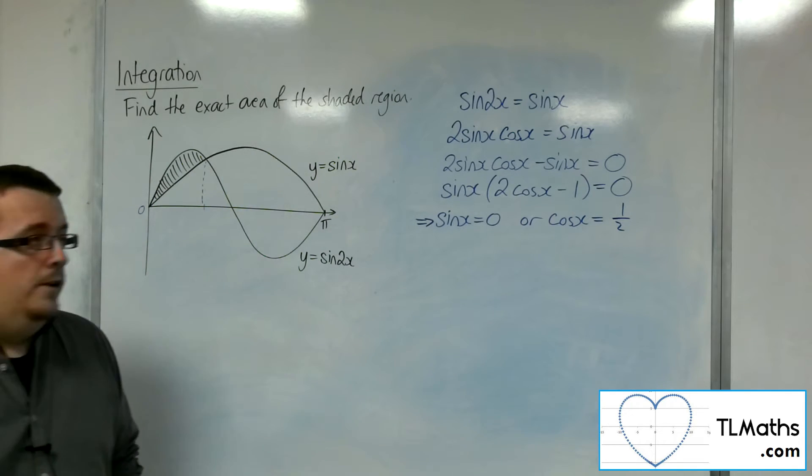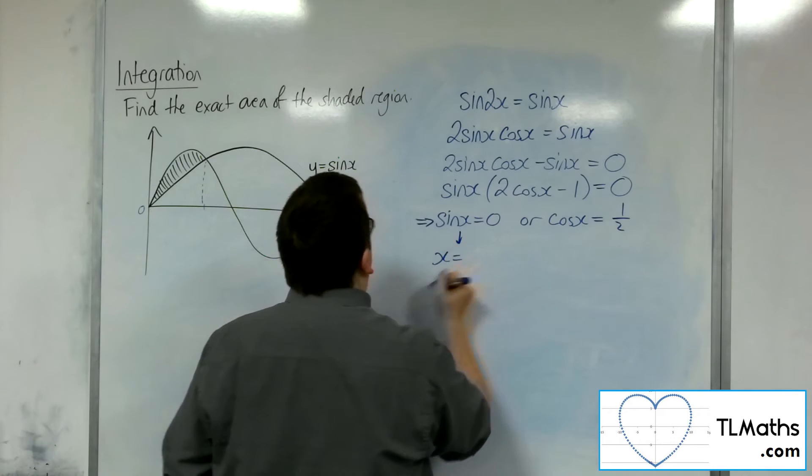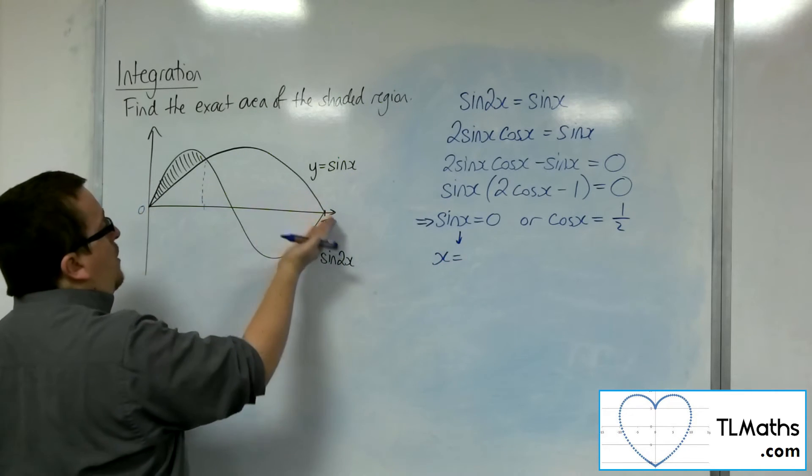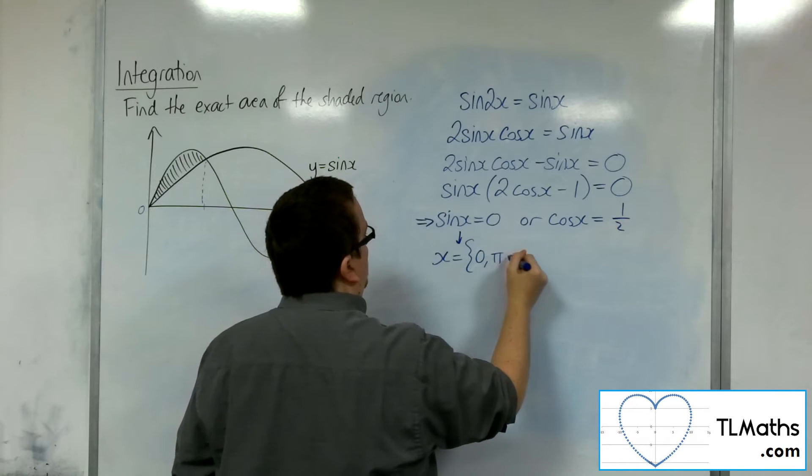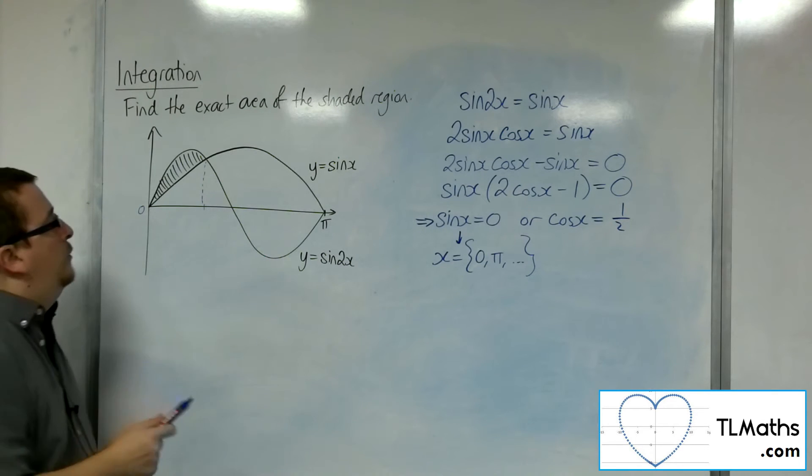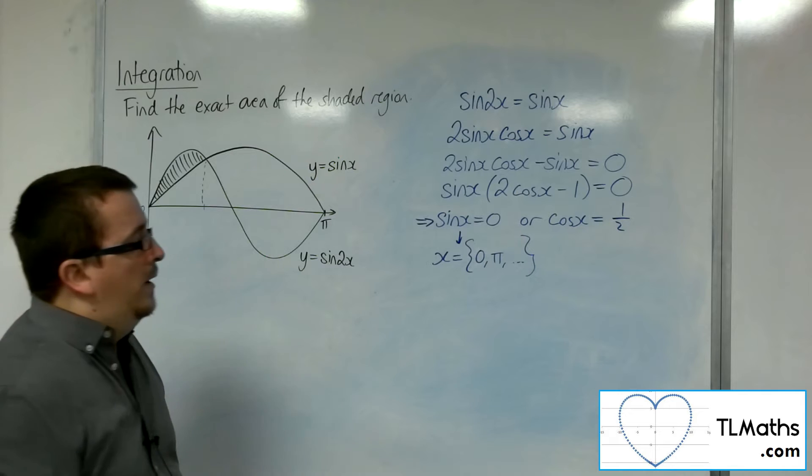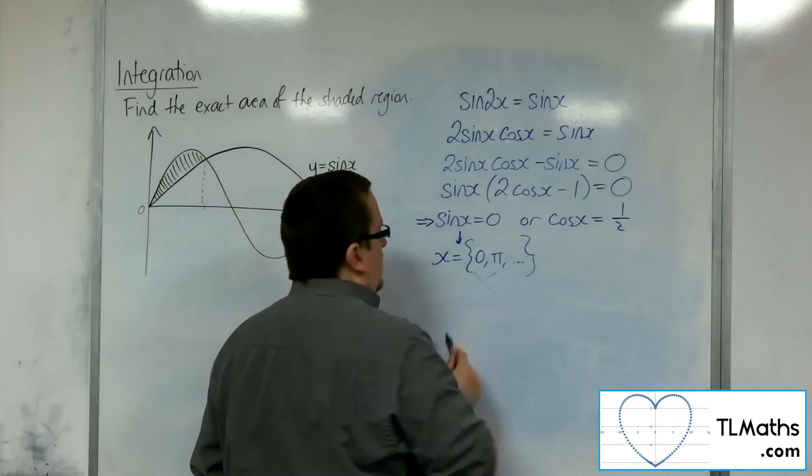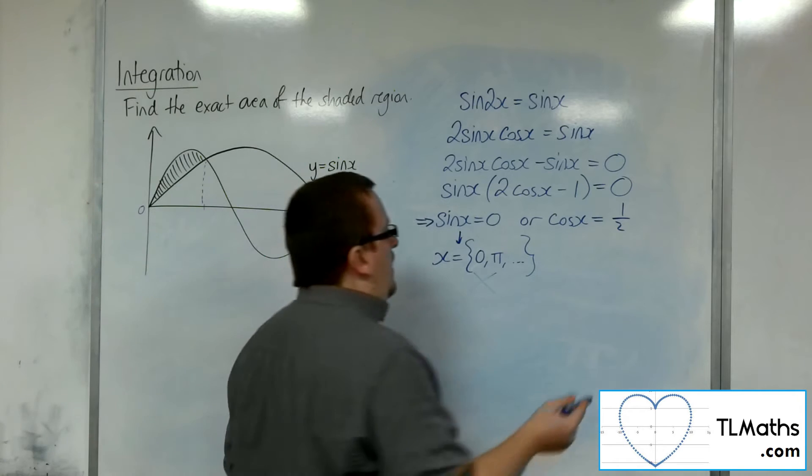Now I know that sine x equals 0 will give me, as I can see from my graph, 0 or pi or 2 pi. Right. So none of those are what I'm looking for because there's 0, there's pi. And I know it's somewhere between 0 and pi. So, not that. So let's try cos x equals 1 half.